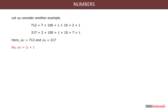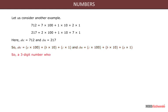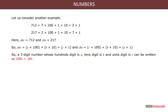So abc is equal to a into 100 plus b into 10 plus c into 1, and cba is equal to c into 100 plus b into 10 plus a into 1. So a three digit number whose hundreds digit is a, tens digit is b and units digit is c can be written as 100a plus 10b plus c, where a is not equal to zero and b and c are whole numbers.